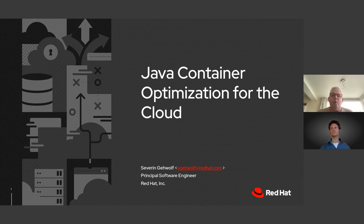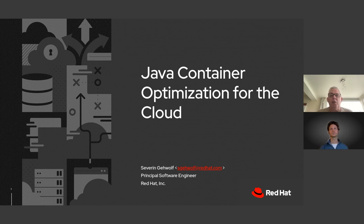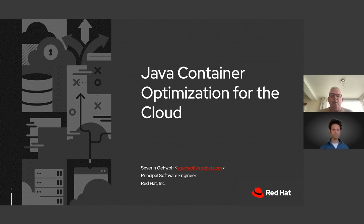Before we begin, we'll go over a few housekeeping items. The webinar is being recorded, so after the webinar you'll receive the recorded link that you can forward along to your co-workers. If you have any questions during the presentation, please submit them in the BrightTalk question field and we'll try to answer them at the end or during the presentation. There will be three separate poll questions displayed during the webinar. You can find the presentation slides and other resources available for downloading in the attachments tab underneath the window.